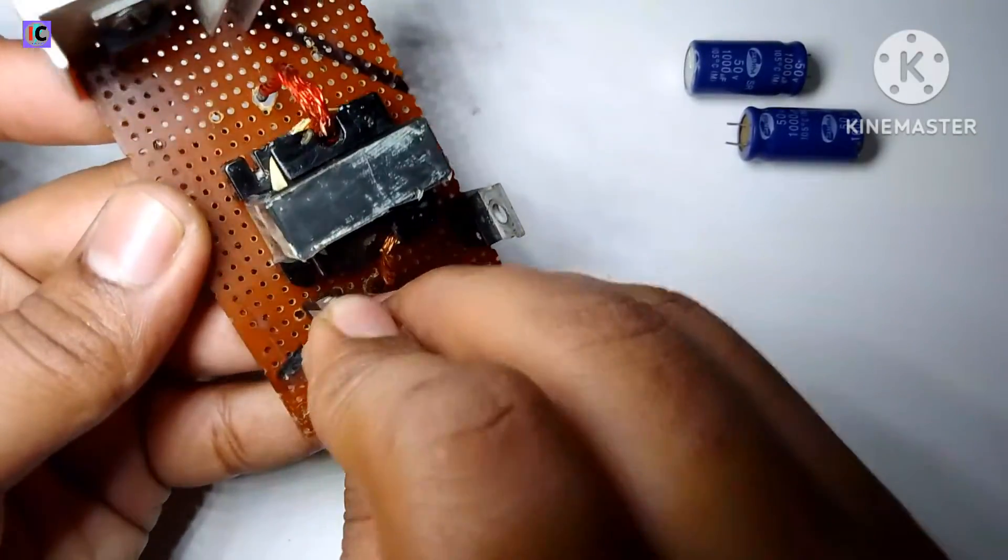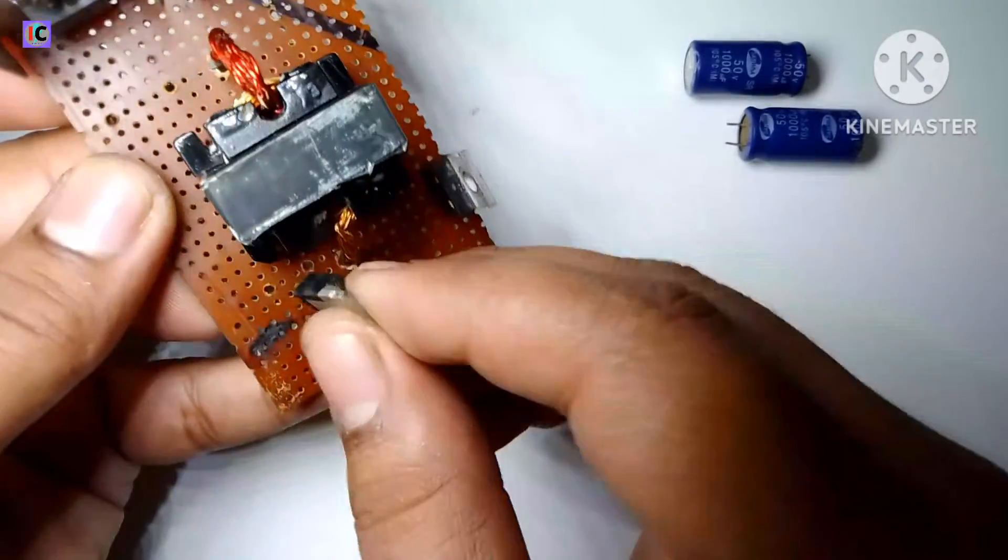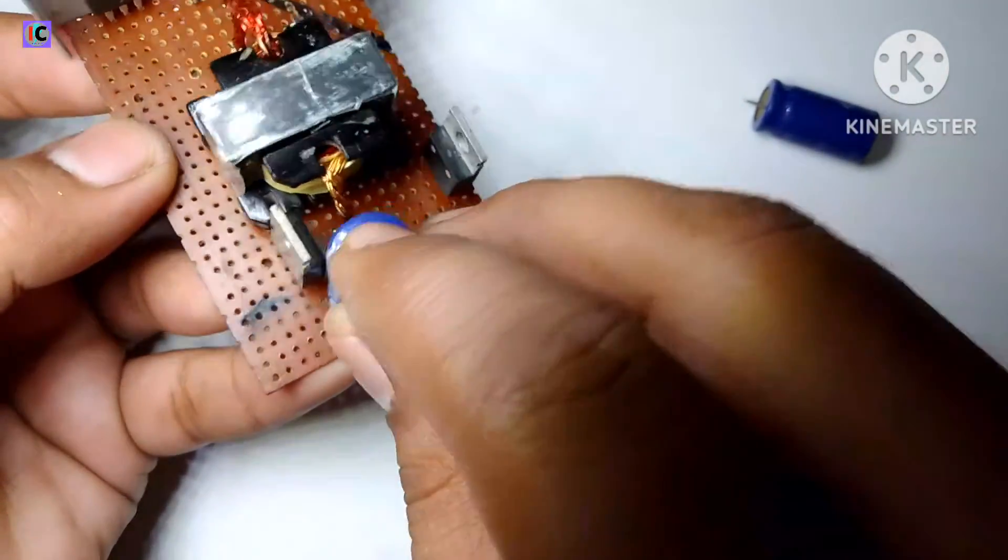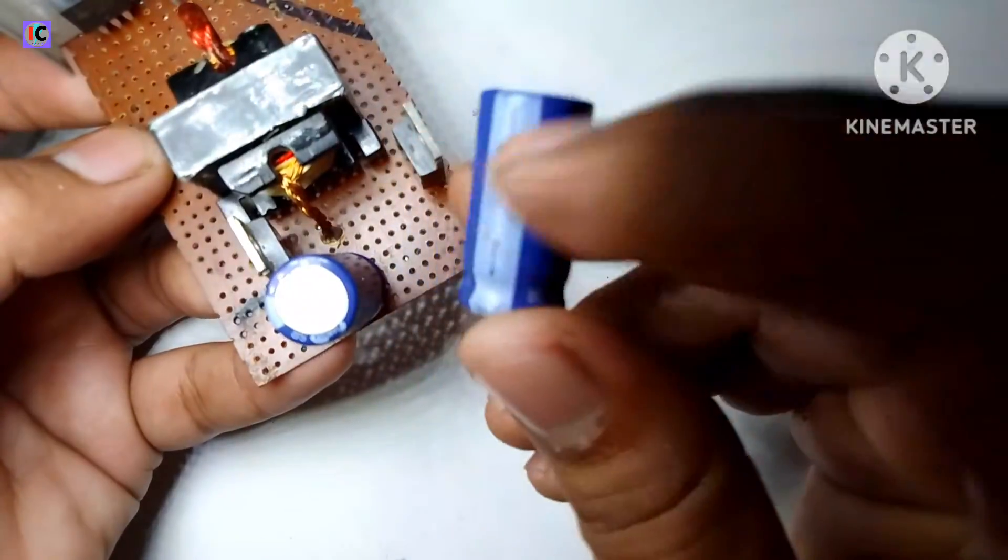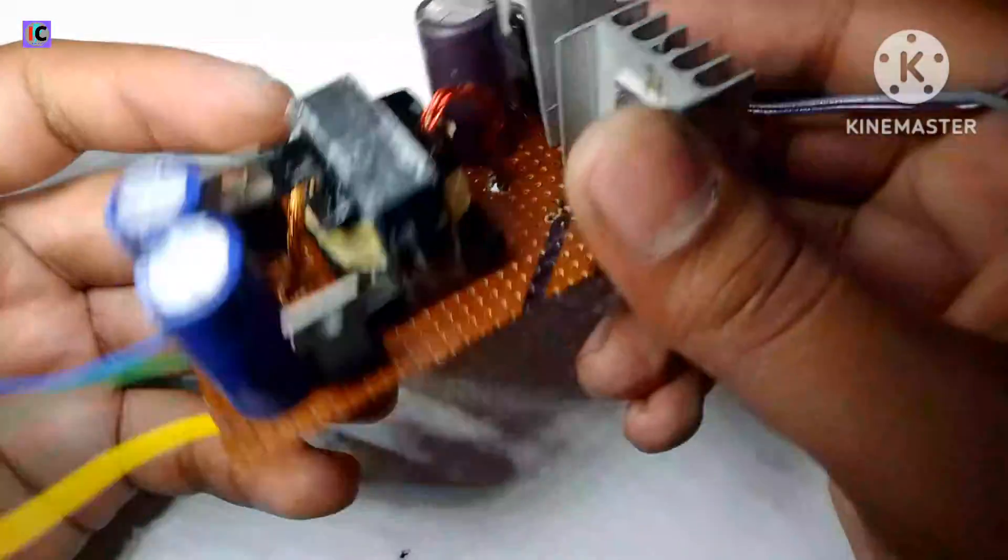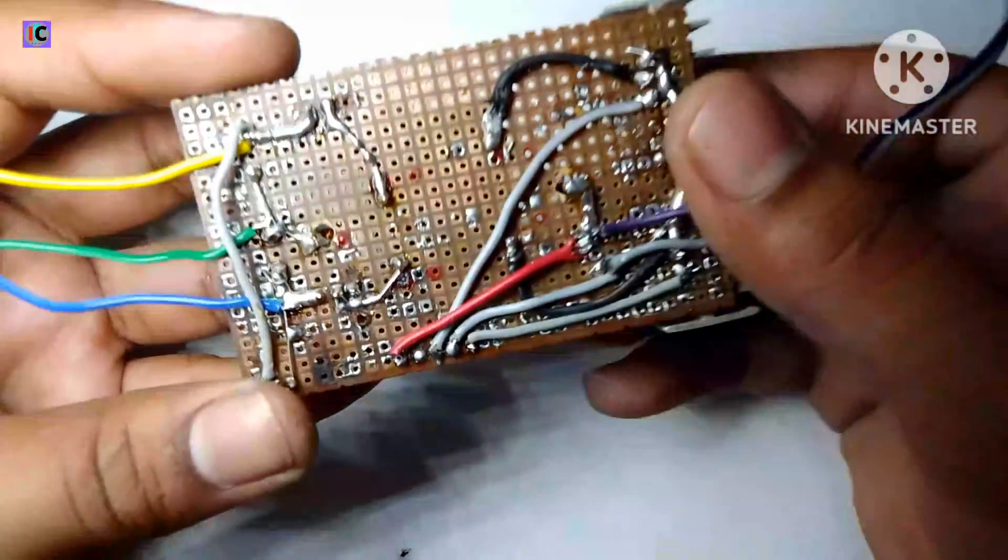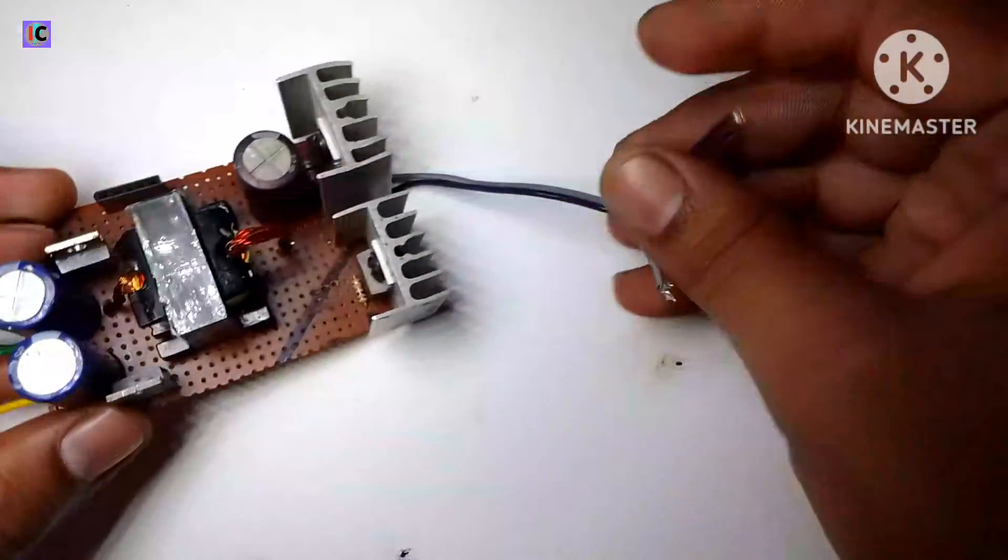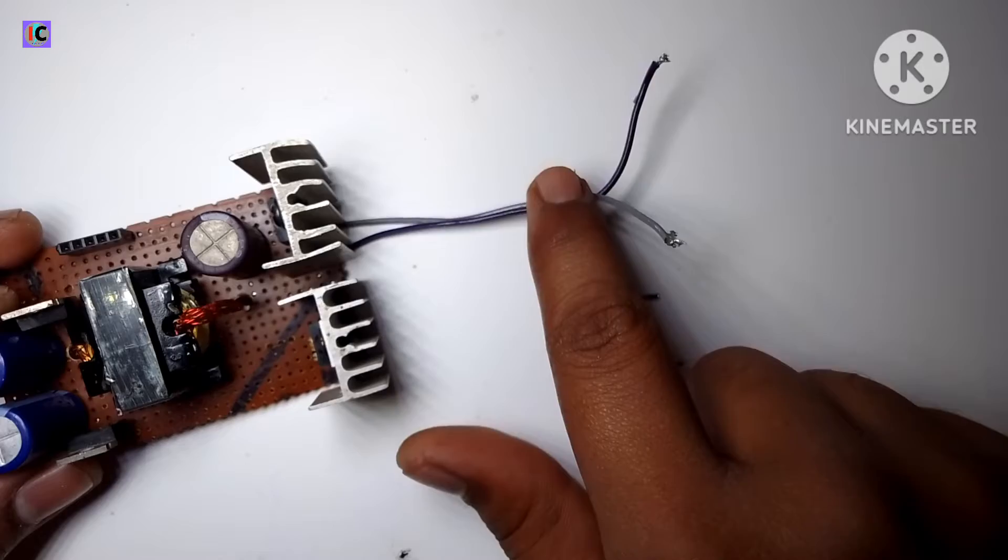The middle point will be left and will connect at the capacitor series portion. This is the negative portion which is connected at the diode. The capacitors are connected in series, and the middle one is the ground portion. This is the 12 volt input line.